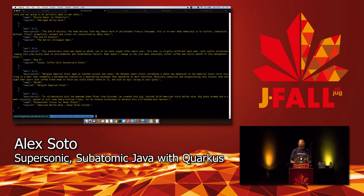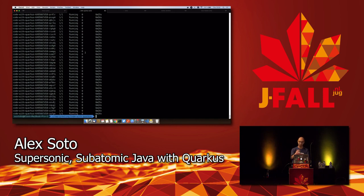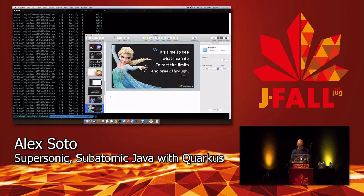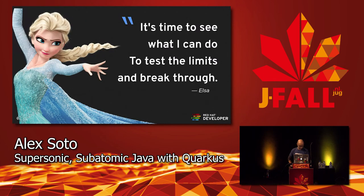Now 100 pods are running and I'm still developing — the machine doesn't seem to be suffering. That's pretty fast: 100 Java instances running on my Kubernetes on my local machine.